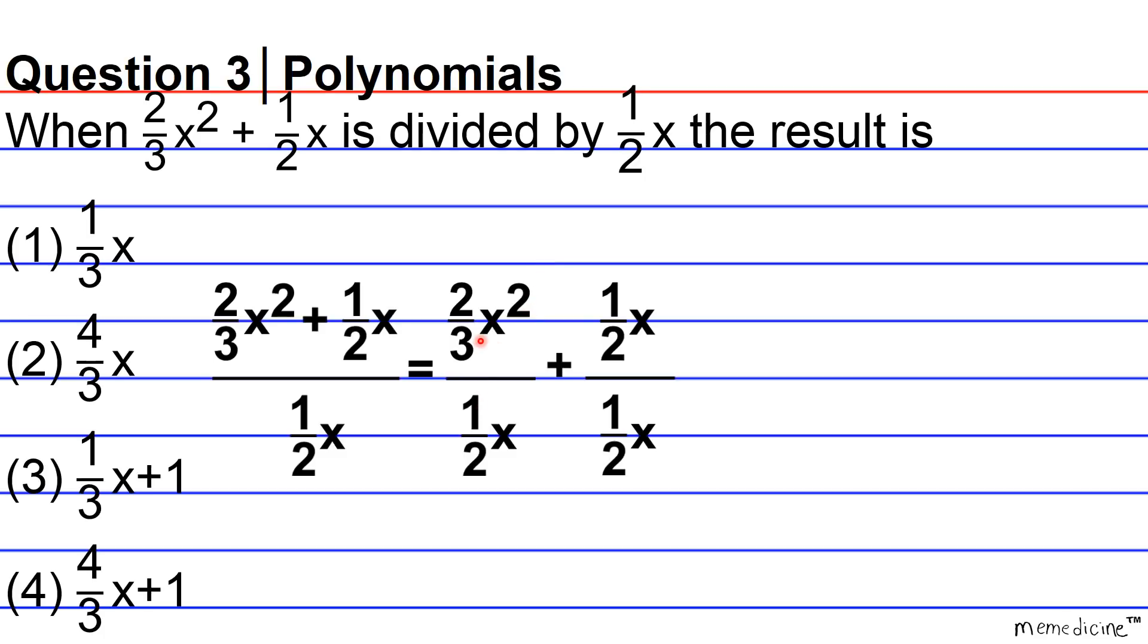Okay. And then if you are dividing a fraction by a fraction, what you can do is simply multiply by the reciprocal of the fraction in the denominator. So instead of dividing 2 over 3 by 1 half, you can simply multiply 2 over 3 by 2 over 1.